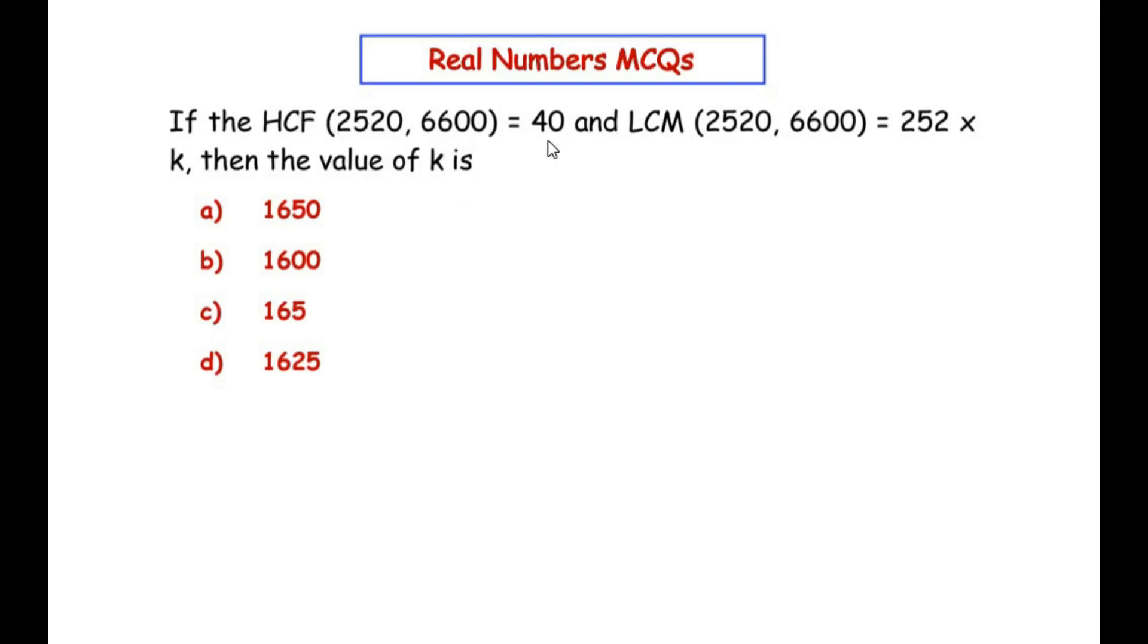In this question, they've given us HCF as 40 and LCM as 252 times k, with two numbers provided. We have a formula relating HCF, LCM, and the given two numbers: HCF × LCM = a × b, where a and b are the two numbers.